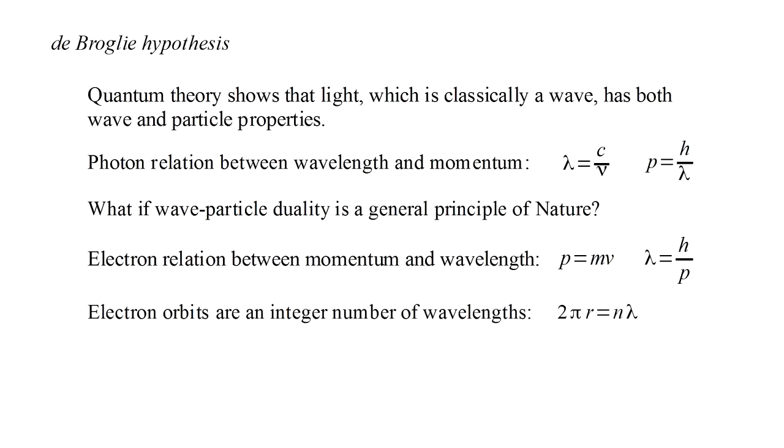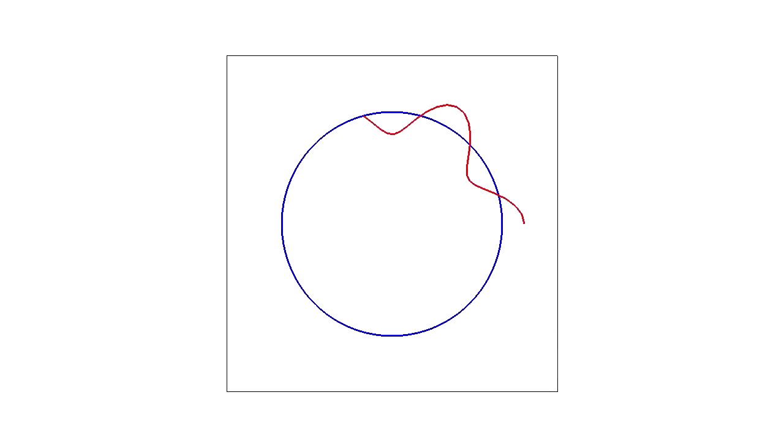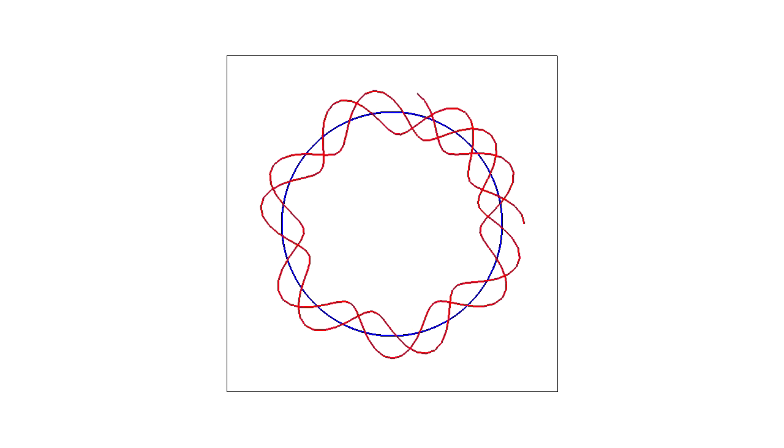Now consider the situation when an integer number of electron wavelengths fit into an electron's orbit. The electron wave would repeat, constructively reinforcing itself and forming a stationary state. But, if the orbit is not an integer number of wavelengths, then the electron wave destructively interferes with itself and no stationary state is possible.